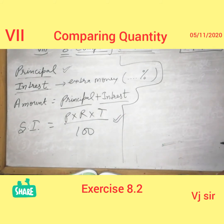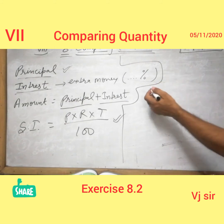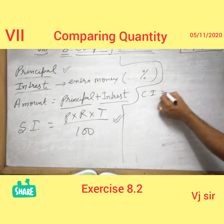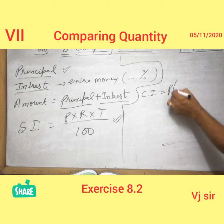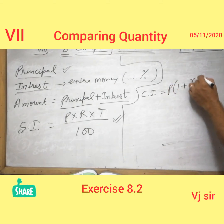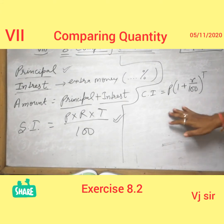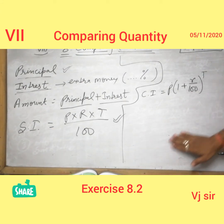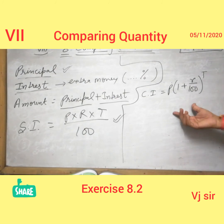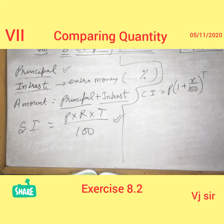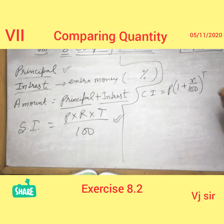Some banks also count their interest as compound interest — CI. CI means P into (1 plus R upon 100) to the power T. The principal amount changes every year and interest is added to the new principal. So the principal changes every year and then we count the compound interest. Compound interest equals that result minus P.